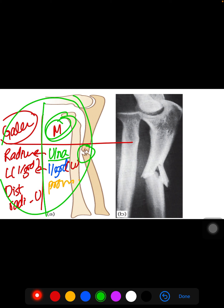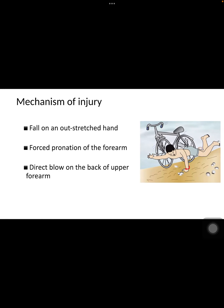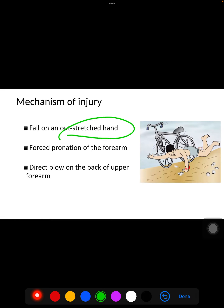To summarize, there is a fracture of the upper one-third of the ulna, which also causes dislocation of the proximal radio-ulnar joint, as can be seen in the figure. The mechanism of injury includes a fall on an outstretched hand with pronation of the forearm, or a direct blow on the back of the upper forearm.